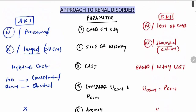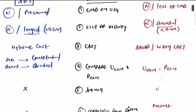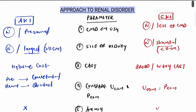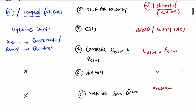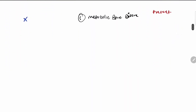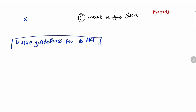This is the approach to renal disorder — based on these parameters we identify acute kidney injury versus chronic kidney injury. Now let's see the KDIGO guidelines for diagnosis of acute kidney injury. There are three stages.